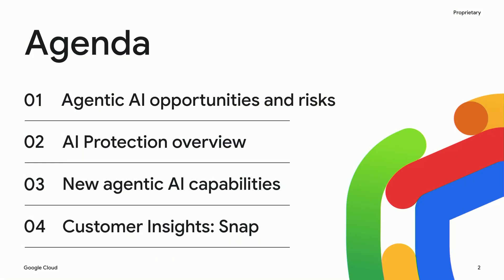Hello all, welcome to Google Cloud Security Summit session on unsupervised autonomy: how to secure AI agents and limit risk. I'm Aniket Patankar, Lead Product Manager on Google Cloud for AI protection. Today, the agenda is we'll review agentic AI opportunities and risks, then I'll provide an overview of AI protection and the new agentic AI capabilities we are bringing with that, and we'll finish off with customer insight in talking to Snap.